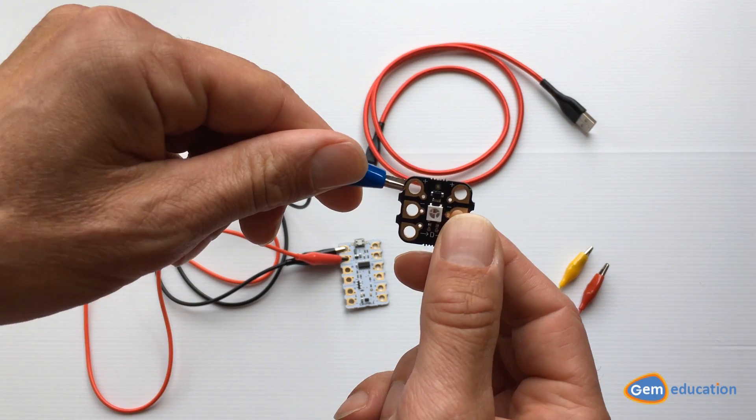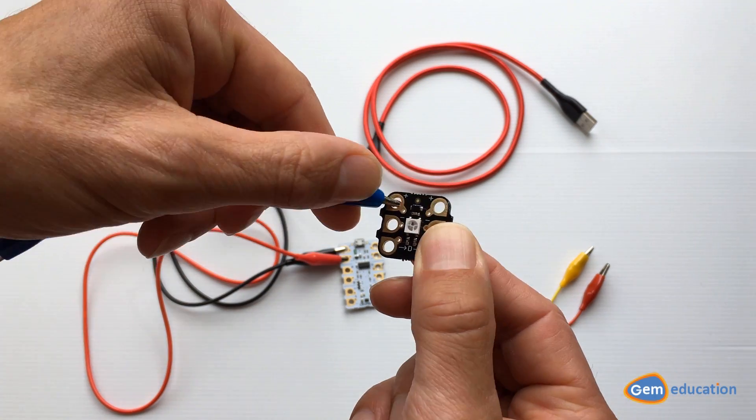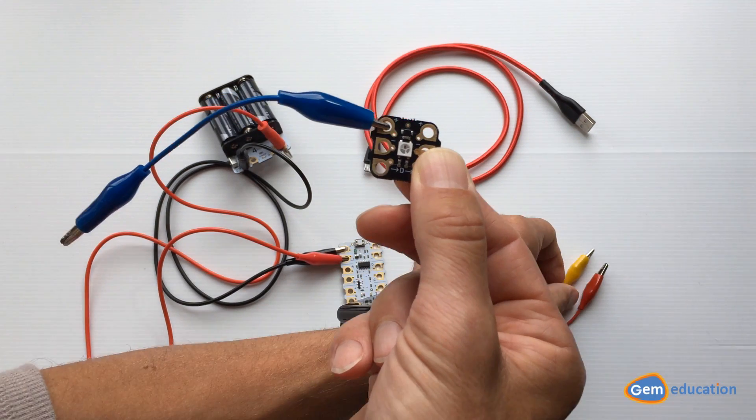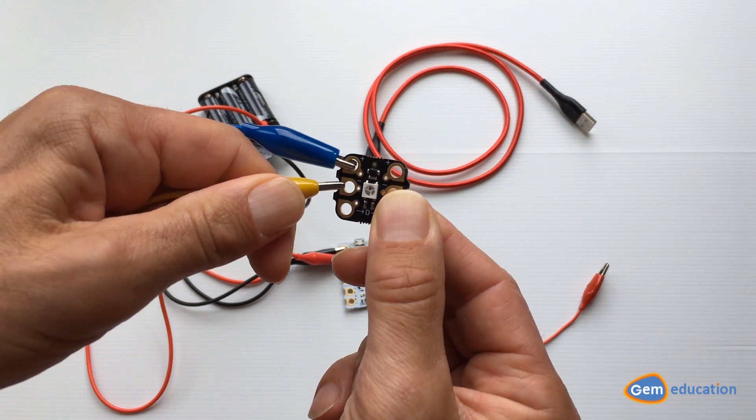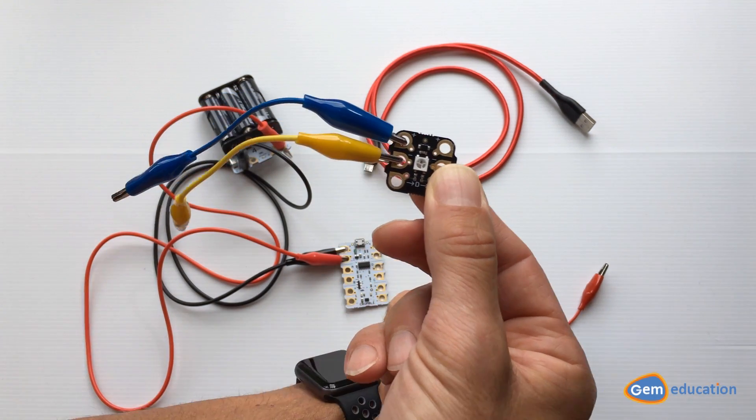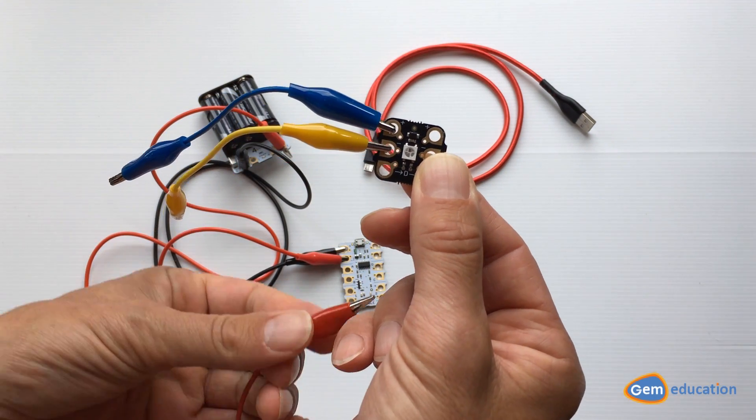I'm going to take one of my crocodile clips and plug it into the plus, then take the next one and plug it into the minus, and then the last clip I'm going to plug into the D. Then I'm going to attach these clips to the right side of my crumble.